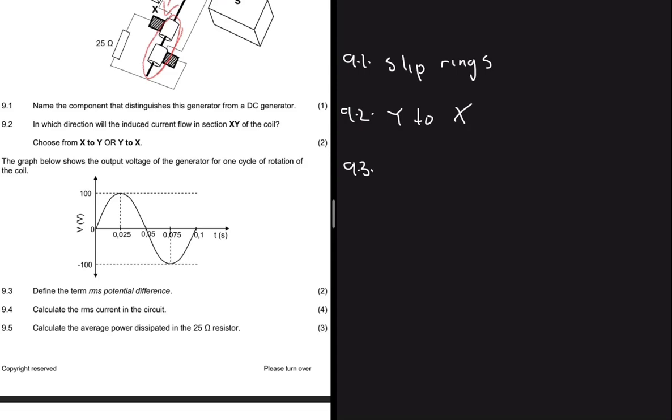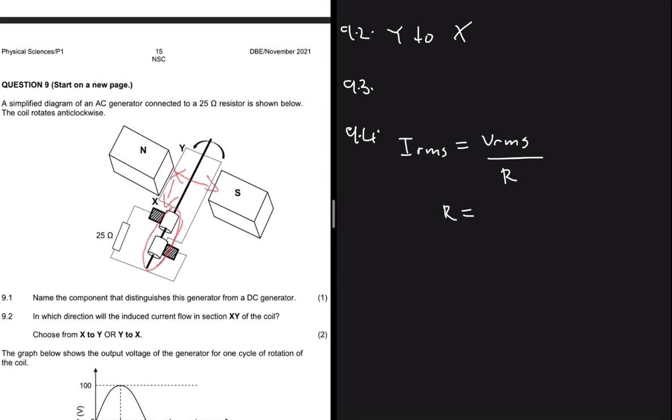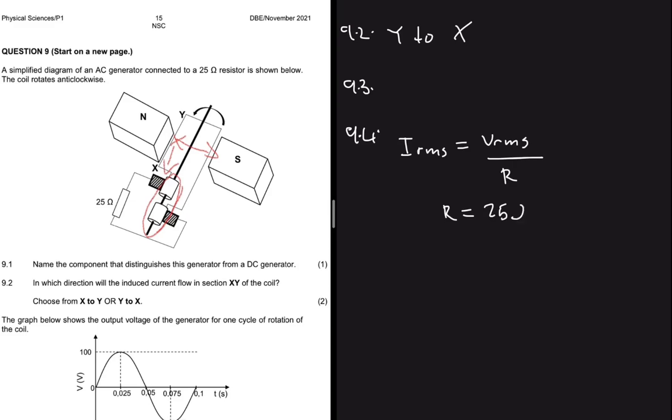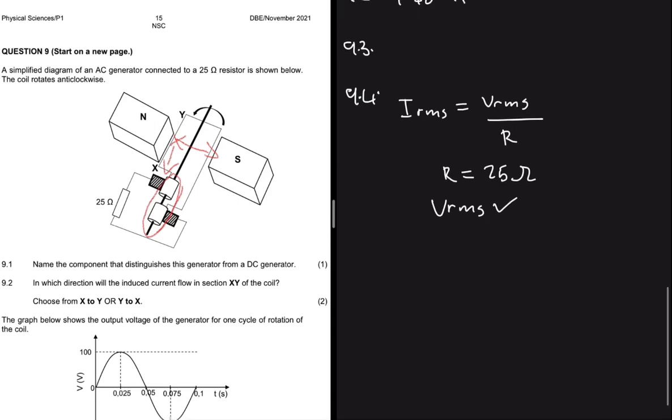Question 9.4 says calculate the RMS current in the circuit. We know fully well that I_rms is equals to V_rms divided by R, R being the resistance. We are given the resistance, it is said to be 25 ohms, but we don't have V_rms so now what we actually need to do is calculate V_rms first and then we can determine I_rms.